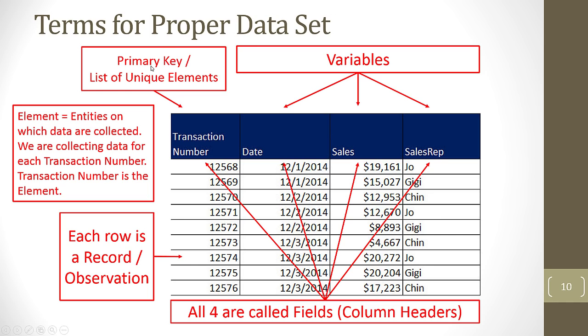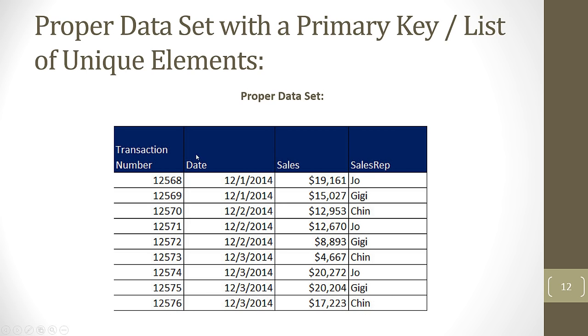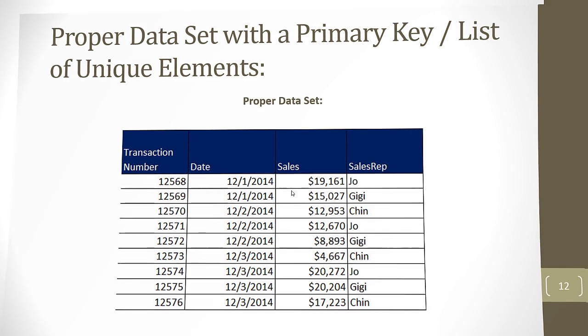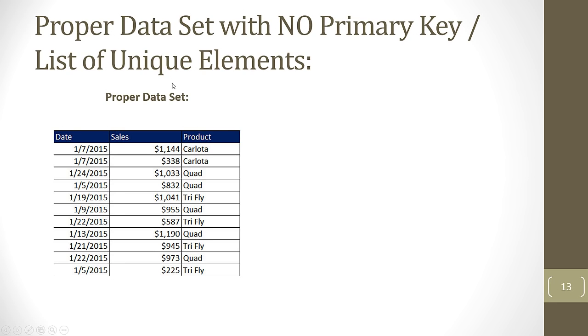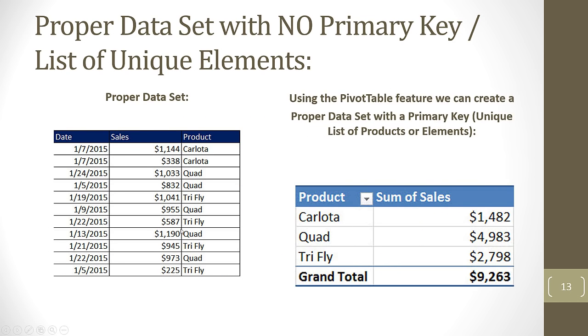Proper data set. Not all proper data sets for us as data analysts in Excel are going to have a primary key or a list of unique elements. Let's go to slide number 12. Here's a proper data set with a primary key or list of unique elements. No problem, we just saw that one. Let's go to our next slide. This is a proper data set with no primary key, no list of unique elements. This is the kind of data we often get in Excel. We can create a unique list of elements by using a pivot table. We took this, dumped it into the pivot table, dragged product down to the row area and our sales over here. Instantly we get a unique list from our product column. The pivot table did that for us. So we're going to have proper data sets in Excel. As long as there's field names at the top, empty cells all the way around, records in rows, and try not to have empty cells, we're good to go for analyzing our data in Excel.